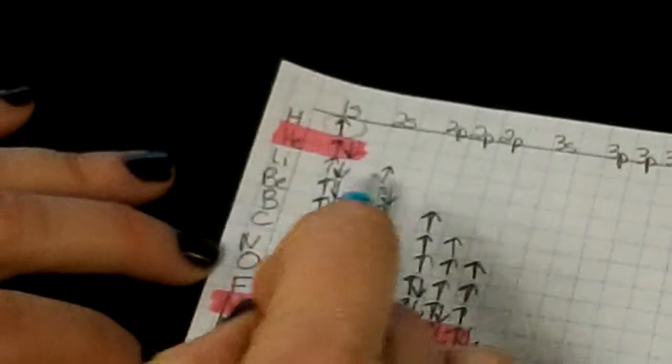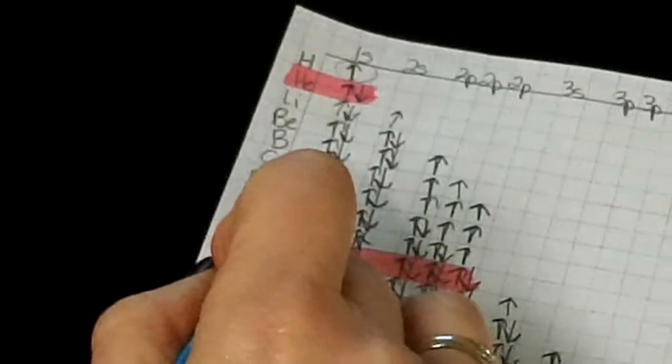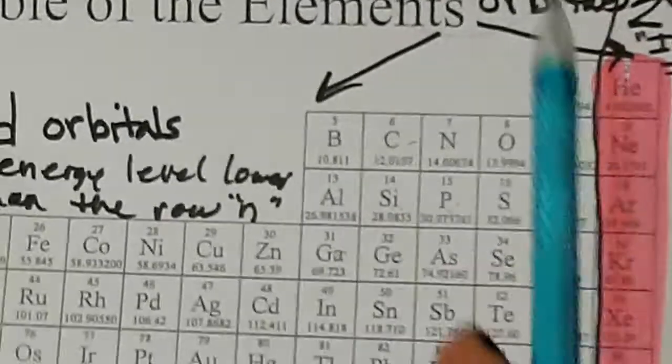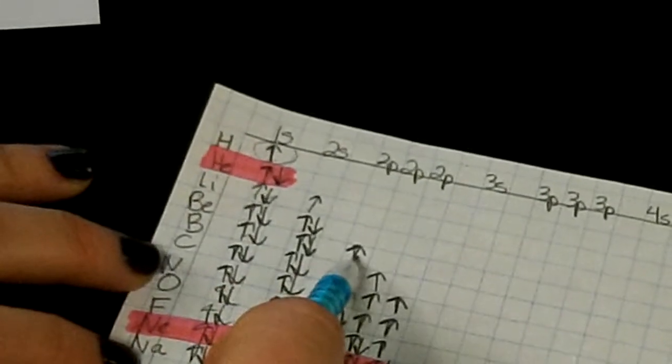All right? And then let's do beryllium. Beryllium's going to have one, two, three, four electrons. And now we go to boron, and boron, as we can see, is in the P orbitals over here. So boron's going to have one, two, three, four, five.